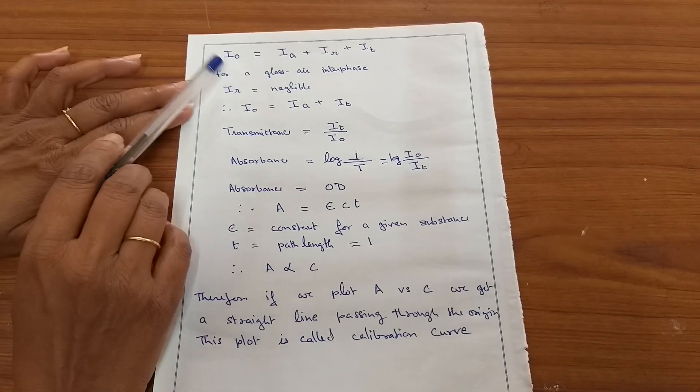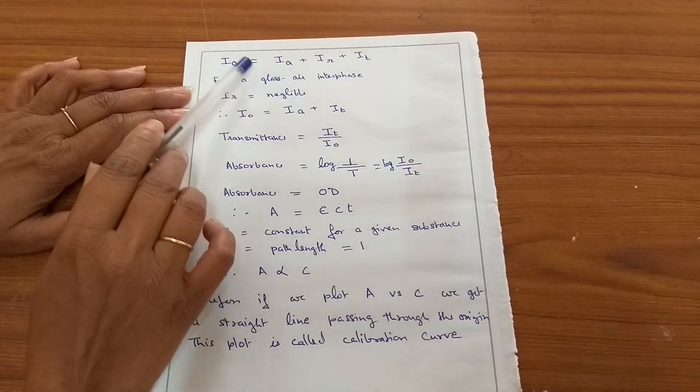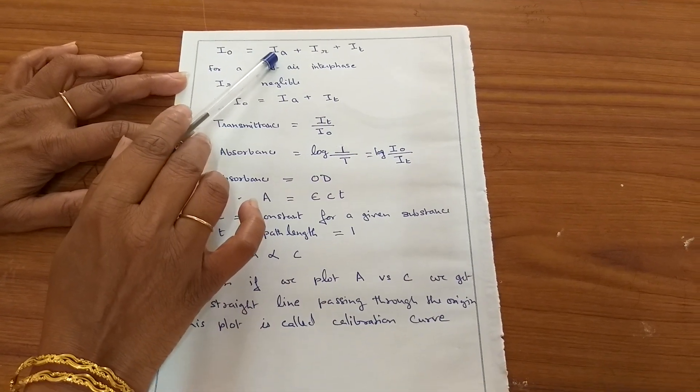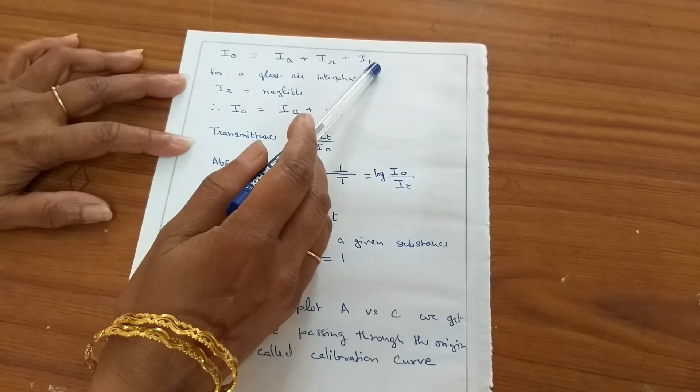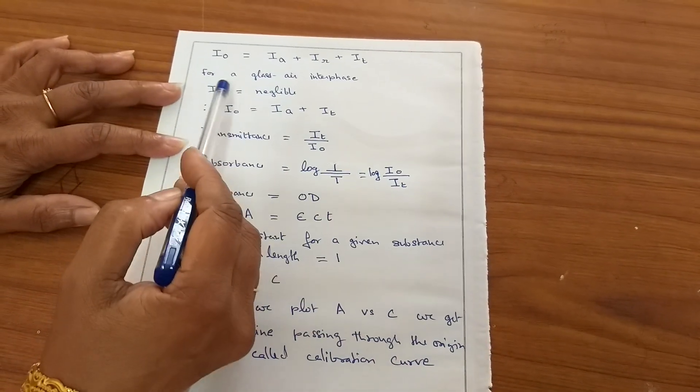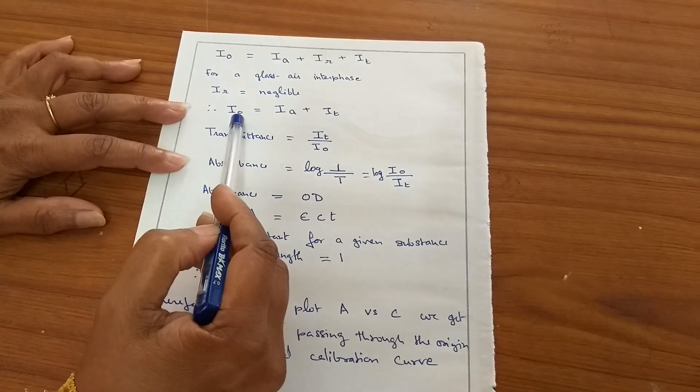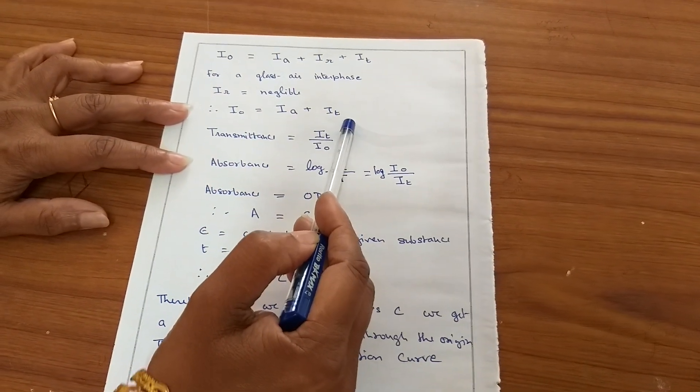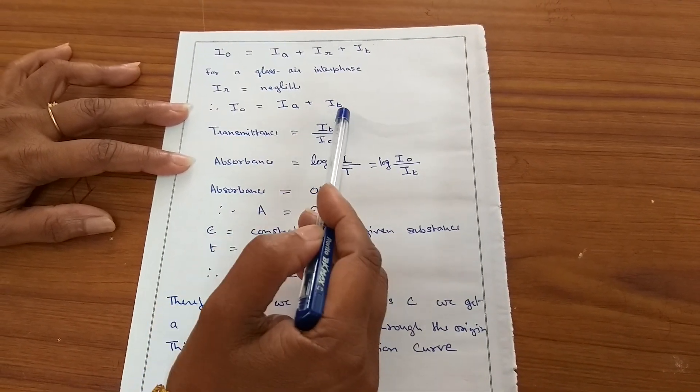Let us see how this experiment can be performed. When light passes through a solution, a part of it is absorbed, a part is reflected, and the remaining is transmitted. When the incident light I₀ passes through a solution, part is absorbed Iₐ, part is reflected I_R, and remaining is transmitted. But for a glass-air interface, the reflection is negligible. Therefore, I₀ equals Iₐ plus I_T — that is, the sum of absorbance plus transmittance.